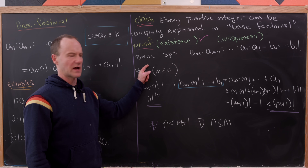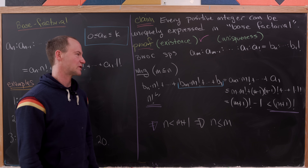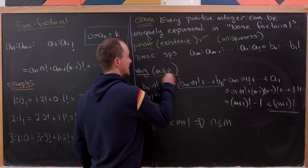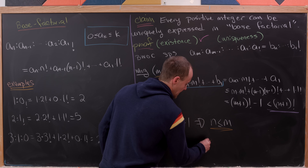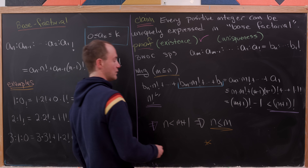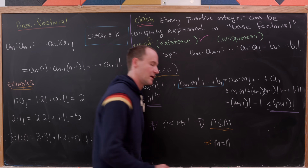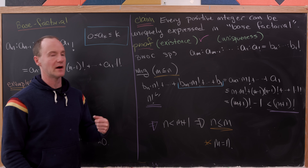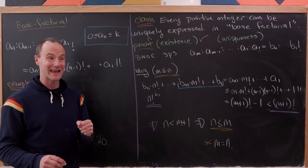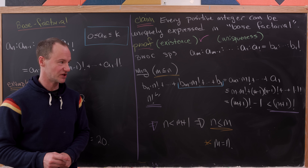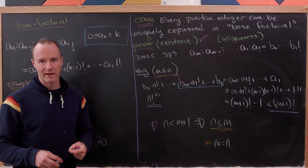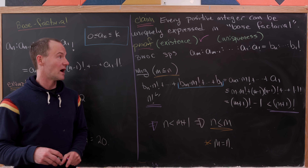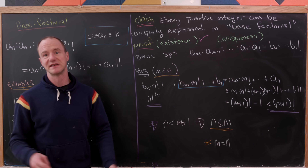Combined with our assumption that m ≤ n, we see that m must equal n. So if we have two expressions of a number in base factorial, they at least have to have the same number of digits. Now what I'd like to do is show that not only do they have the same number of digits, but they actually have to have all of the same digits.